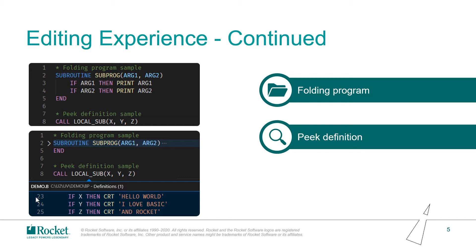This feature also works for some statements, for example, if, loop, read, write, or open. And sometimes you may want to look at a subroutine or function's implementation, but you don't know where the implementation code is or how to locate a related file. Another feature, go to definition and peek definition, will help you. Through this feature, you can easily hover a pointer over a function or subroutine, right-click, then select go to definition to jump to the implementation code, or select peek definition to view the content in an embedded window. This also works for variables and labels.